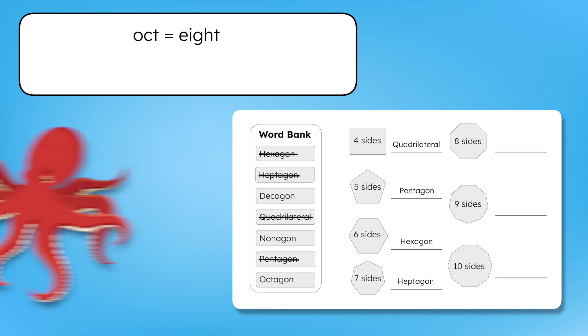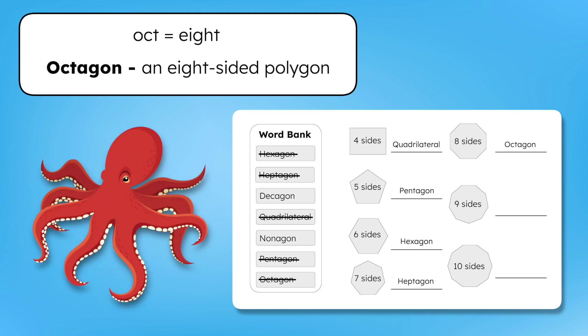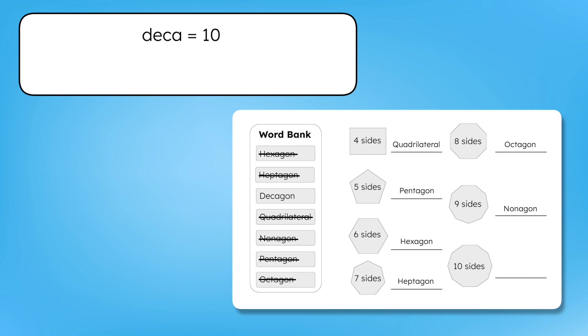"Oct" means eight, just like how an octopus has eight arms, and an eight-sided shape is called an octagon. "Nona" means nine, so a nine-sided shape is called a nonagon. And finally, the prefix "deca" means ten, like a decade of years — a shape with ten sides is called a decagon. Now we know the names of all these different polygons based on how many sides they have.